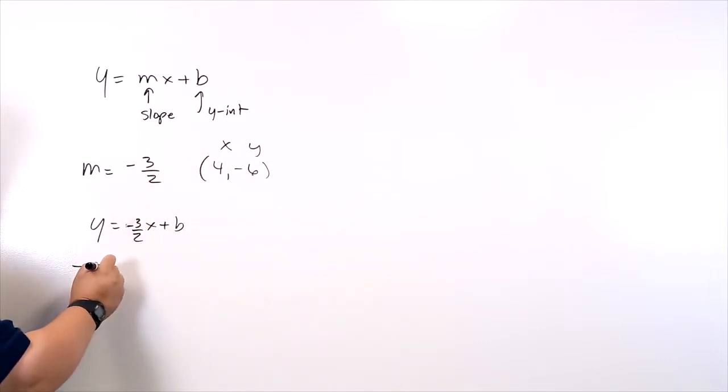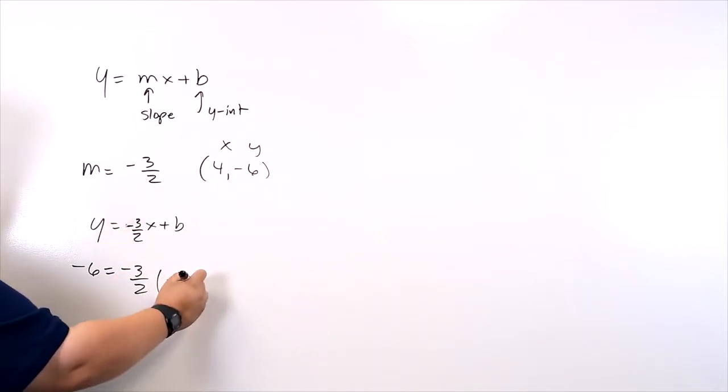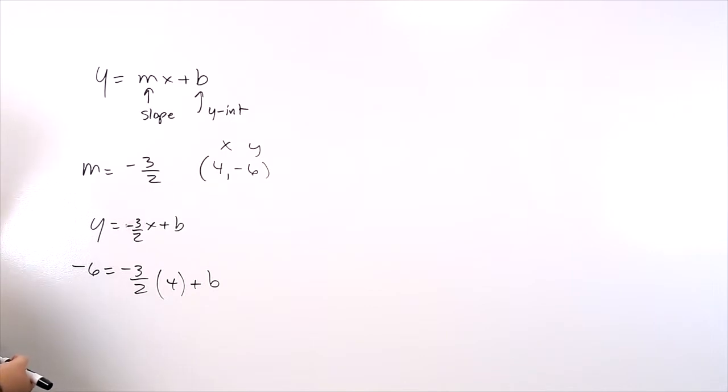Y is what? Negative 6 equals negative 3 over 2 times x. What's x? 4 plus b. Negative 3 over 2 times 4. Let's put a 1 over here and then let's multiply. Let's multiply the numbers first. 3 times 4 is 12. 2 times 1 is 2. Don't forget the negative.